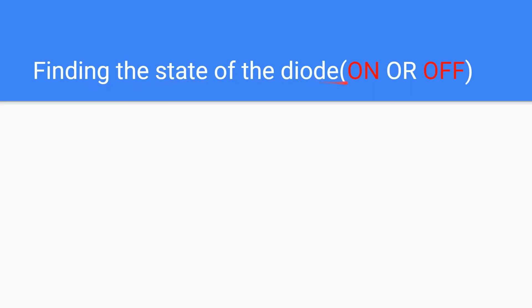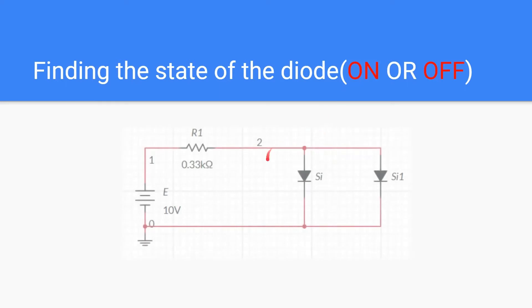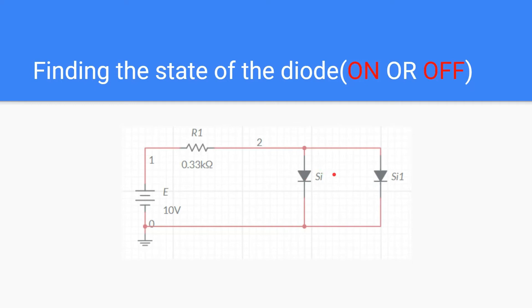First, we will find the state of the diode — whether it is on or off. To find the state of the diode, we need to find the direction of the current going through it. If you want to know how to determine whether the diode is on or off, you can refer to my first video. The current will be established in this direction and will split among both diodes. Since the direction of the current matches the arrow of the diode, they can be replaced by a 0.7 volt drop across them.